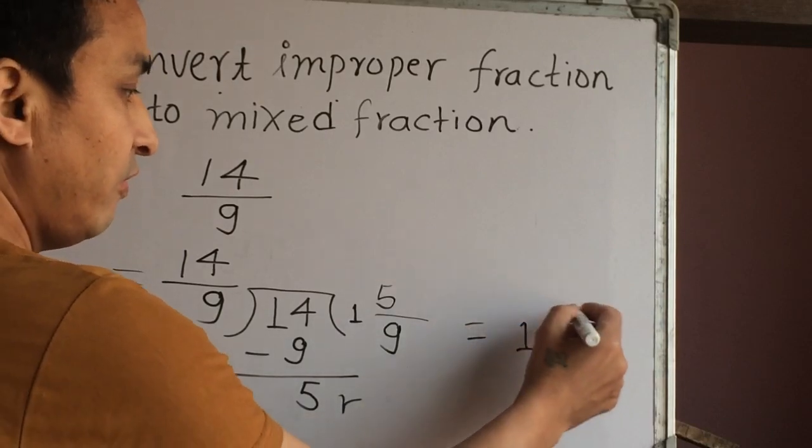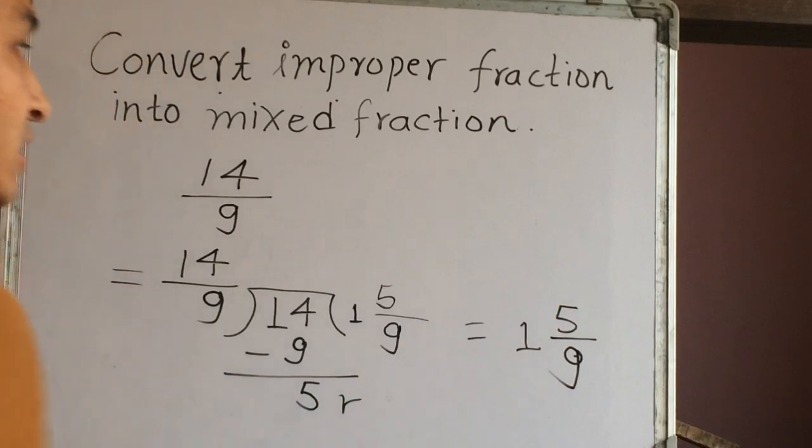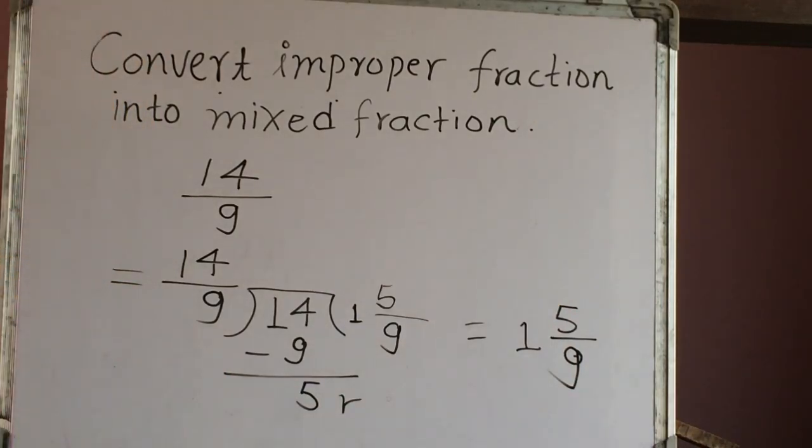1 and 5 out of 9 is the mixed fraction of 14 out of 9. Thank you for watching this video.